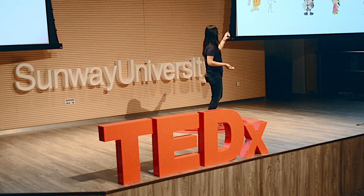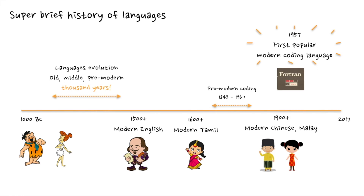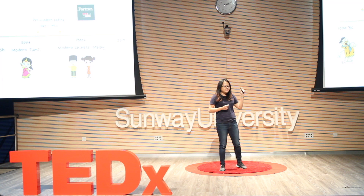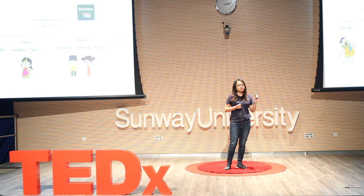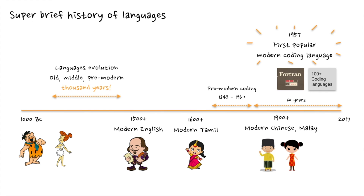How about coding language? Since when have we had something called coding? The first time someone wrote a coding program was in 1843. It wasn't very famous until 1957 — the same year as Malaysia's Independence Day, by the way. That's when the first popular modern coding language, called Fortran, was introduced. This language is still used in some mission-critical applications today. Within just 60 years, we have about 100-plus new languages that we can use nowadays.